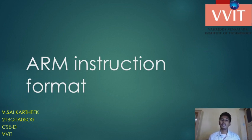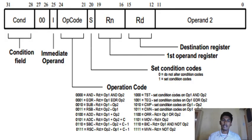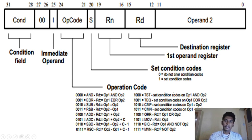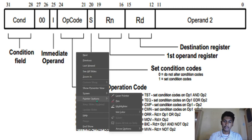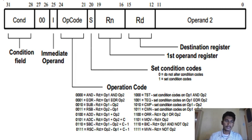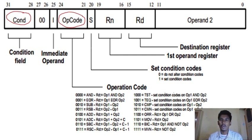This is the ARM instruction format — the instruction format for the ARM structure. Here we can see the condition field, which holds conditions like shift operations. It is placed in the condition field. Next is the opcode field. Opcode defines what type of operations you want to perform on the registers — like add, subtract, multiply, etc. There are many opcodes in the opcode field.